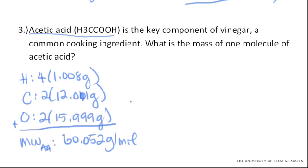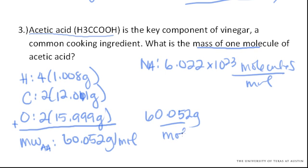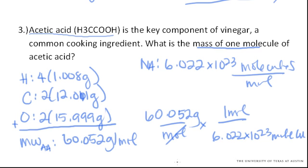You can find molecular weight for anything that way. Now, what is the mass of one molecule? This is where we have to use Avogadro's number, which is 6.022×10²³ molecules per mole. If we know our molecular mass is 60.052 grams per mole, and we cancel out moles using 6.022×10²³ molecules, we find that one molecule weighs 9.97×10⁻²³ grams.